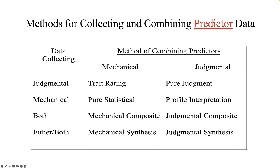You may be asking which method is best. In general, research shows that mechanical methods of combining predictor data are best. While everyone thinks they have great intuition or are great judges of character, the reality is that they probably are not. Too many outside factors can influence the decision process on any given day, so it is better to minimize subjectivity in decision making.